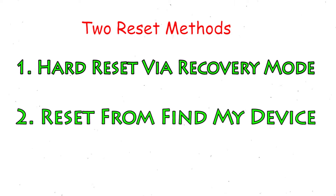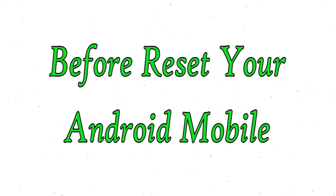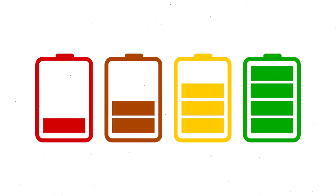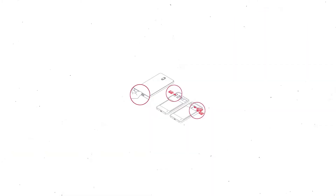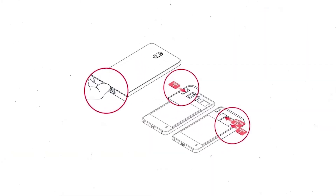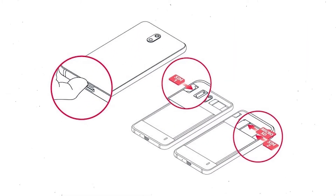Second method: reset from Google Find My Device. Before resetting your mobile, make sure the battery is properly charged. If less than 50%, charge your mobile. You need to make sure that the data on your device is backed up so you do not lose valuable photos or documents. Reset deletes all your mobile data, so you should back up all important data and remove your SIM and SD card.